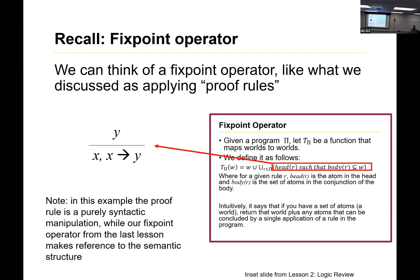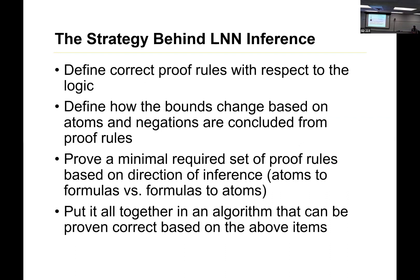Fixed-points are more common in things like logic programming; proof rules you tend to see more in verification, but sometimes they come up in logic and get called axioms. Based on their logic, they define a set of correct proof rules. One thing that's nice about this is that if you develop new logical syntax or a new kind of operator, as long as you develop the proof rules associated with it, you could in theory extend their algorithms and still get correctness. They prove in the paper a minimum set of proof rules based on the direction of inference — one set for the forward, one for the upward, one for the downward — all put together in an algorithm that's proven to be correct.